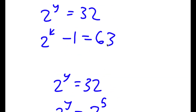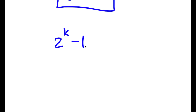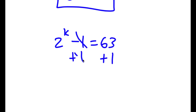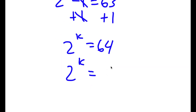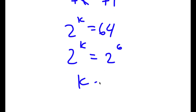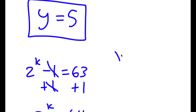Now for 2 to the power of k minus 1 equals 63, I add 1 on both sides so these two cancel out, giving 2 to the power of k equals 64. Since 64 equals 2 to the power of 6, k equals 6. Now remember x equals y plus k, so x equals 5 plus 6, meaning x equals 11.